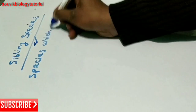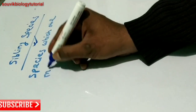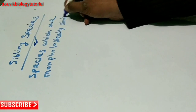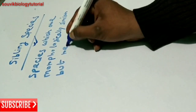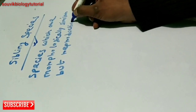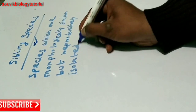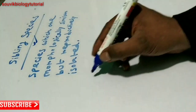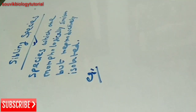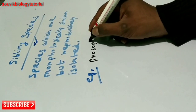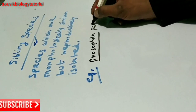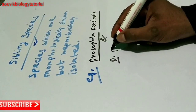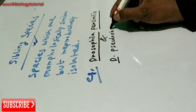Sibling species are species which are morphologically similar but reproductively isolated. For example, Drosophila persimilis and Drosophila pseudoobscura.